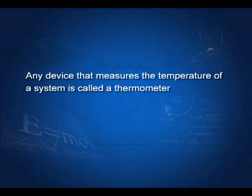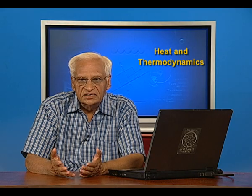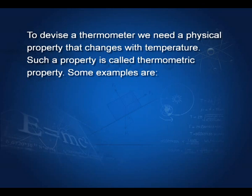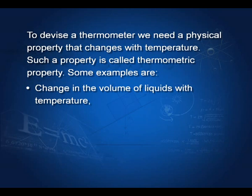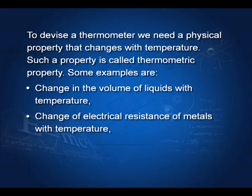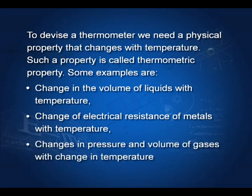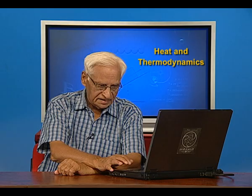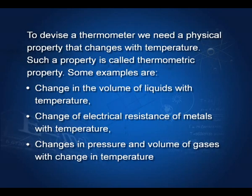How do you measure temperature? Any device that measures temperature is called a thermometer. To devise a thermometer, we have to take some property that changes with temperature. For example, the volume of a liquid changes with temperature, so we can employ volume to measure temperature. Electrical resistance of metals changes with temperature, so we can have resistance thermometers. Changes in pressure and volume of gases also vary with temperature, giving us constant-volume and constant-pressure gas thermometers. These properties are called thermometric properties — they allow us to measure temperature.